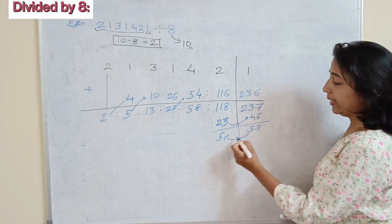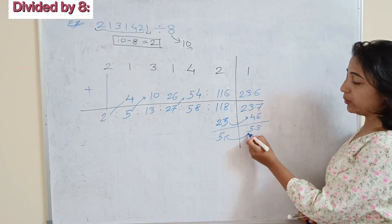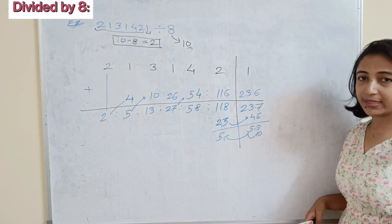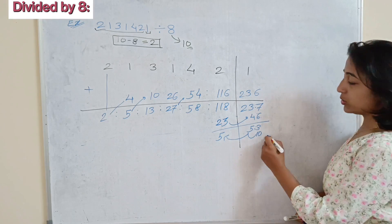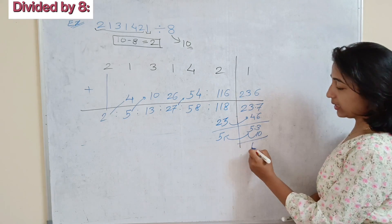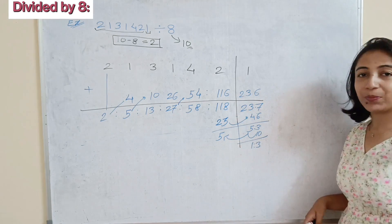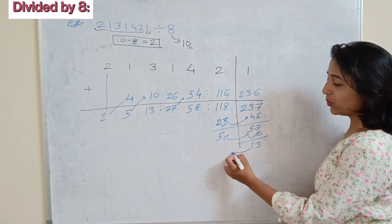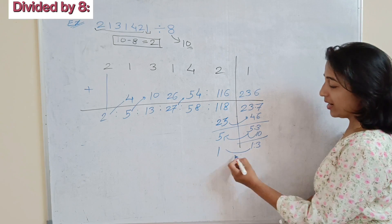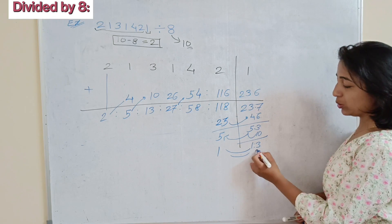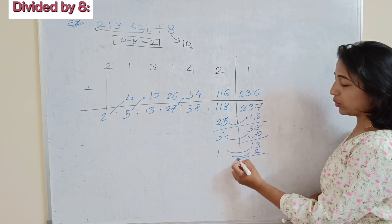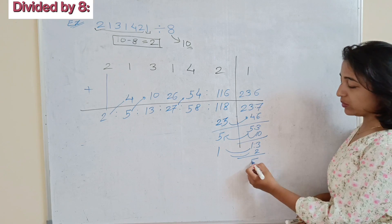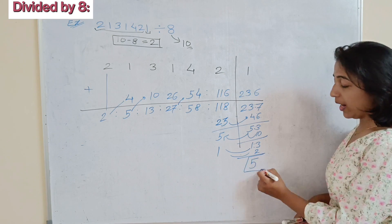Carry 5: double of 5 is 10; add to next number giving 13. Break 13 again: carry 1 and double of 1 is 2; add to 3 giving 5. So 5 is our remainder.